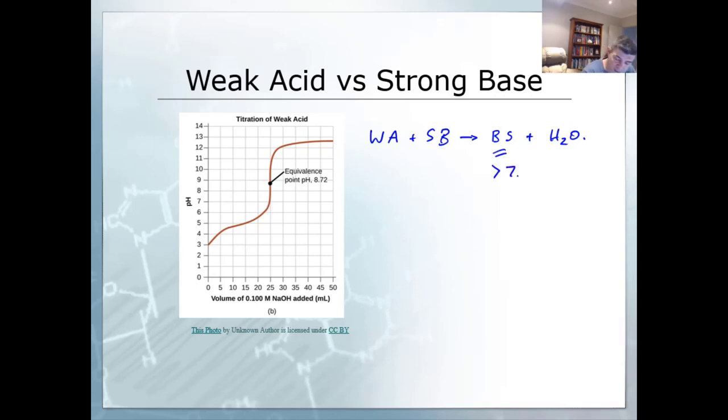So two things to notice about this. First of all, you've got this rapid initial rise, which we didn't see previously. And that's because the weak acid is not fully ionized, and therefore the addition of the base is going to shift the equilibrium. It's going to use up all of the H-plus ions, and therefore shift the equilibrium in order to produce more H-plus ions.